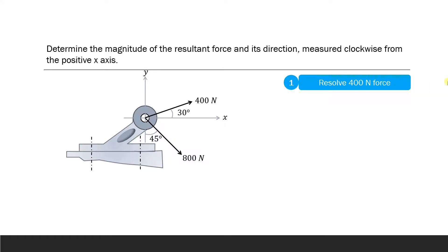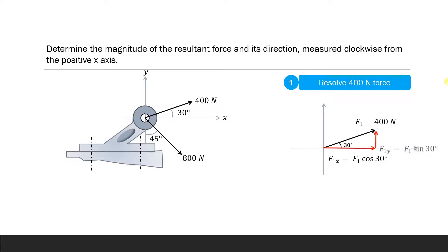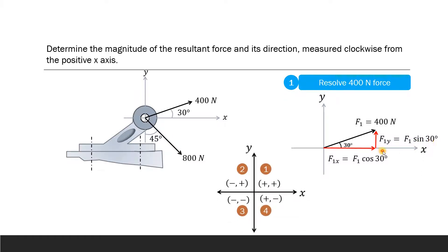Let us first consider the resolution of the 400 Newton force, which makes an angle of 30 degrees to the positive x-axis. It will have two components: one in the x-direction and one in the y-direction. The component adjacent to this angle is the cosine component, so it is F1 cos 30, and the component opposite to this angle is the sine component, so it is F1 sin 30.